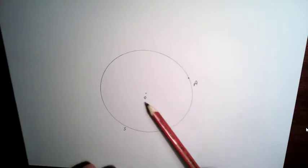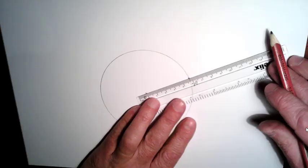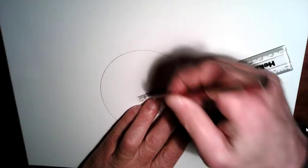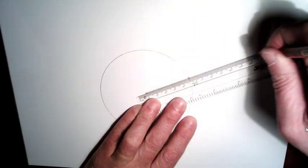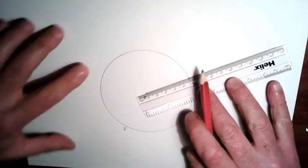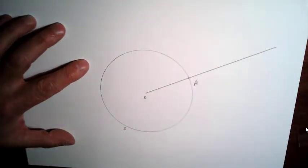The center of this circle is O and the first thing we're going to do is draw a ray OA. So we're going to take a ruler, draw a line from O through A, and there's a line here.